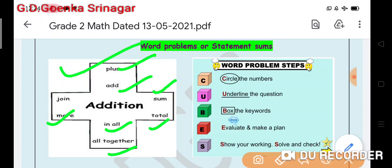Now before solving a word problem we have to keep some important steps in our mind. So the first step is to circle the number. Second step is to underline the clue words or the question. Then box the key words. Evaluate, that means to think and then make a plan. The final and the last step is solve and check.